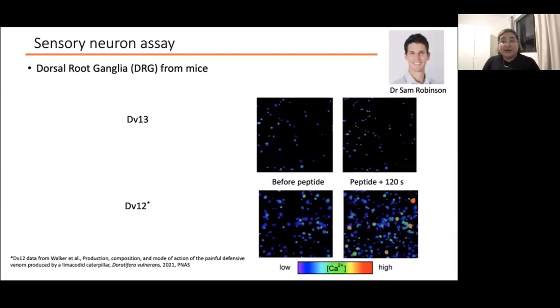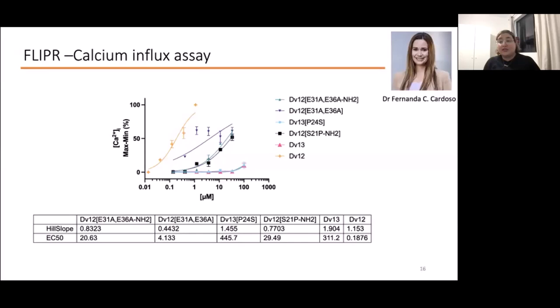We then did DRG assay to assess the ability of these peptides to induce nociception or pain. In this assay, you can measure intracellular calcium as an indicator for neuronal activation that would occur during pain. DV13 didn't show any activity, but DV12 would cause the cells to light up like a Christmas tree. Again, you can see that they are getting a bit more specialized to act against the mammalian cells. After DRG, to get the same results quantitatively, we ran some FLIPR assay. This is a FLIPR Duplex assay with calcium influx and a cell death assay. As you can see, DV12 is still the most potent one with the lowest EC50, and the same results can be seen in the cell death assay.